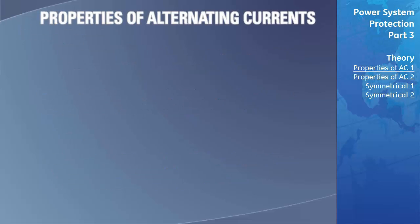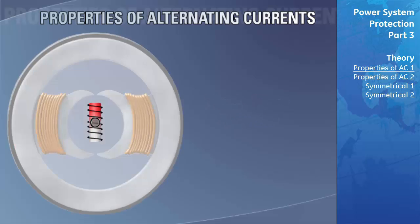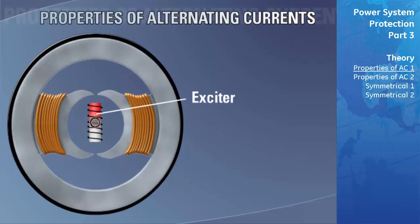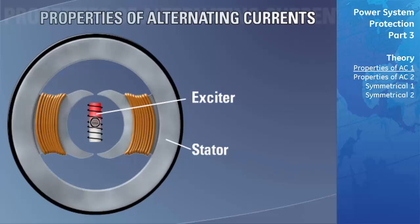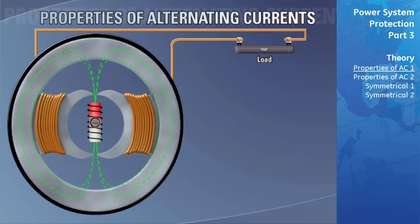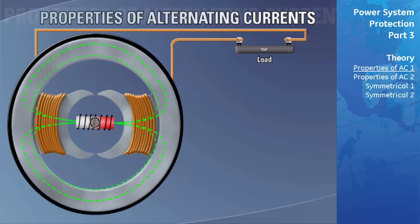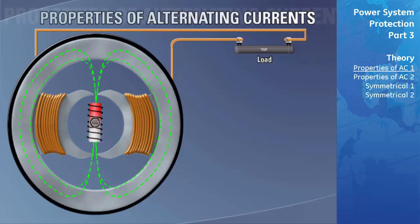For instructional purposes, let's look at the theory of operation of a single-phase electrical generator. The single-phase generator is composed of two major components: the exciter and a stator. The exciter is an electromagnet that rotates about its axis. The stator is constructed from two electromagnets or poles wired in series with a load and remains stationary. When DC current flows through the exciter windings, a magnetic field is formed, and as the exciter rotates, its field cuts through the stator windings, inducing a voltage.